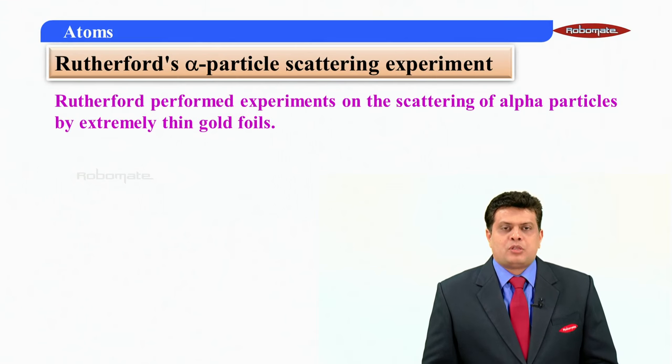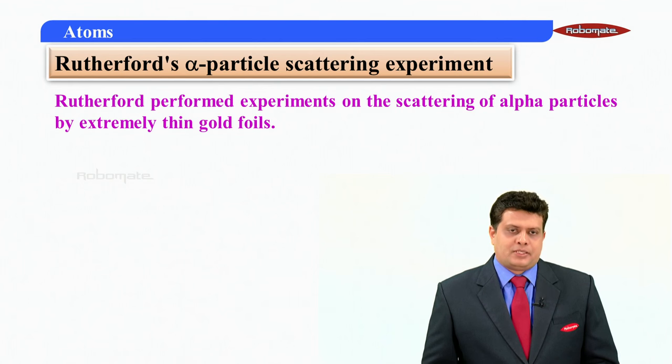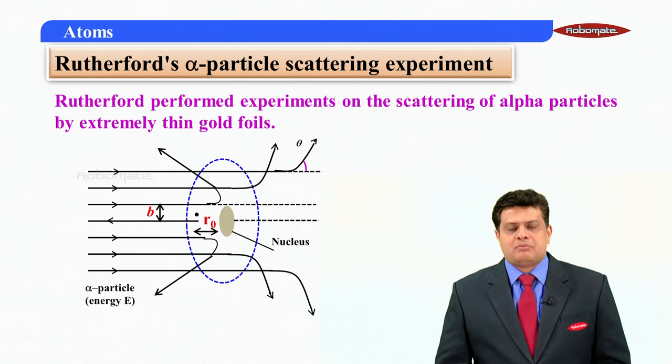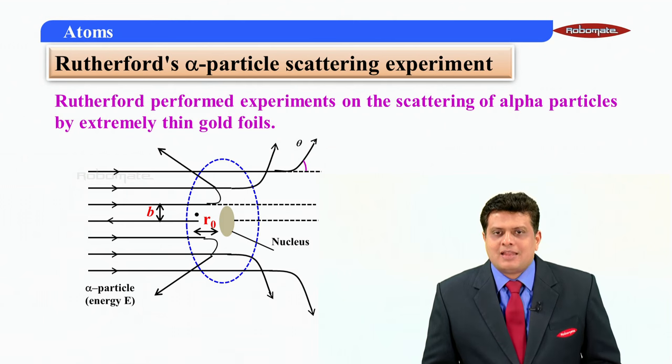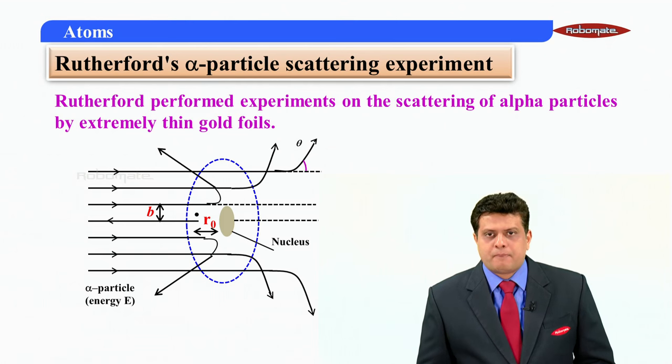All of us know that Rutherford performed that experiment on the alpha particles, whenever they are scattered by the thin gold foils. A schematic diagram that has been shown to you. I want you to see R-not there. Can you see that R-not? And that is nothing but distance of closest approach.